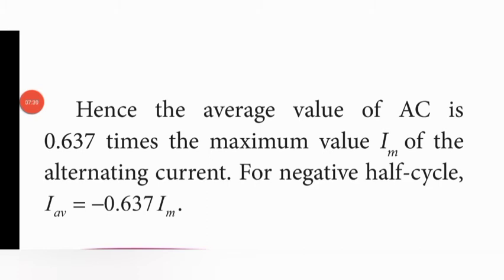For the negative half cycle, only the sign changes: I_average = −0.637 I_m. This is the value of the AC current for the negative half cycle.